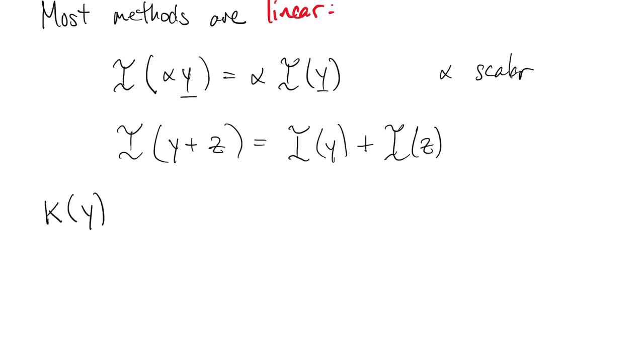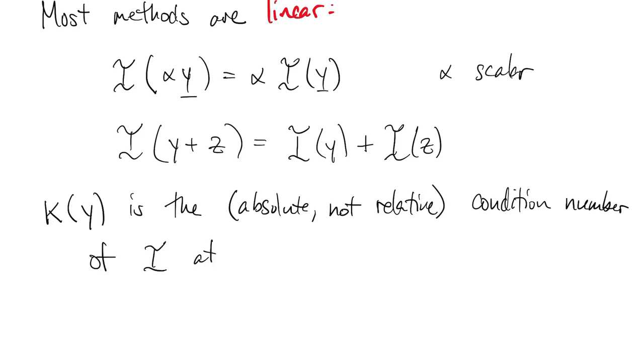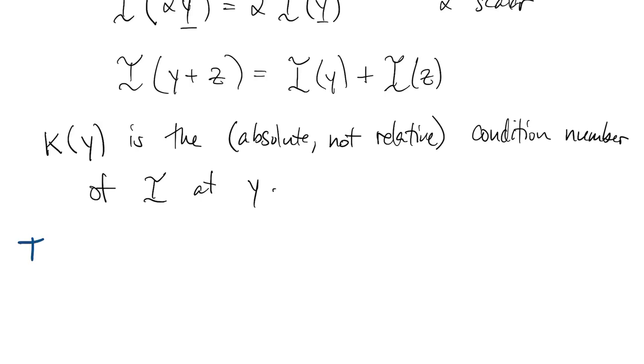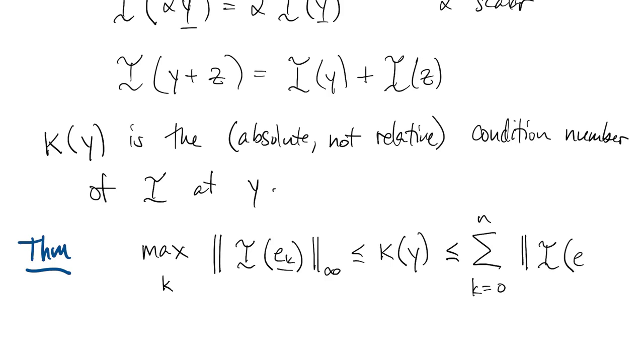Finally, let's use kappa of y to designate the condition number, using absolute measurement of errors, not relative, of the squiggly eye operator at the data vector y. For linear methods, we have a theorem, which I present here. You can find the proof of this theorem in the book, but here I'm just going to try to explain what it means.